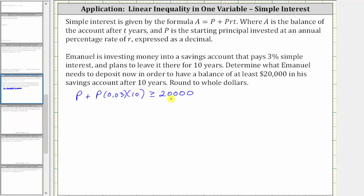And now to solve the inequality, we begin by simplifying the left side. P times 0.03 times 10 is equal to P times 0.3, or 0.3P, giving us P plus 0.3P is greater than or equal to 20,000.